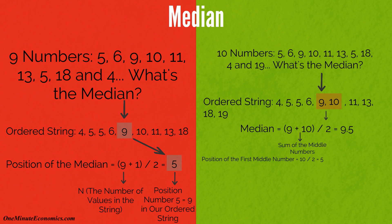N divided by 2 will be your first number's position. Then add 1 and that will be the second number's position.